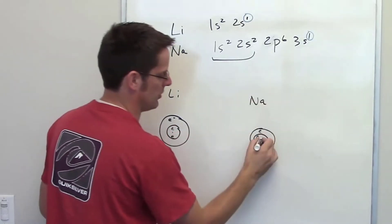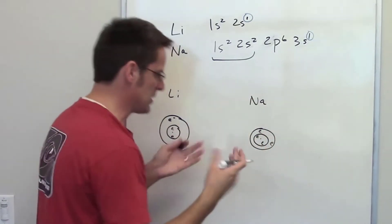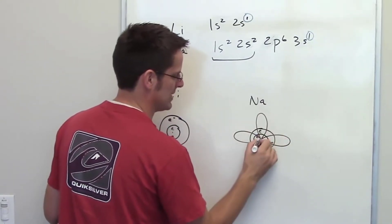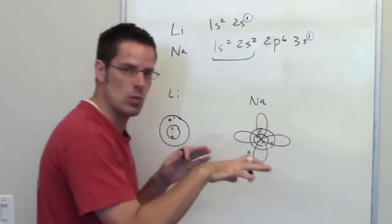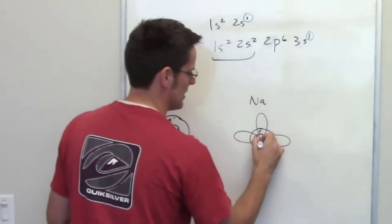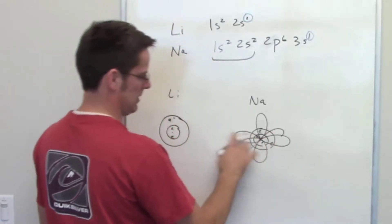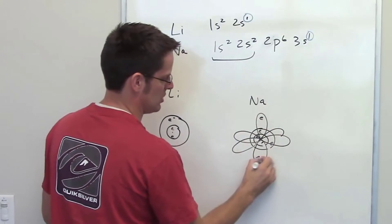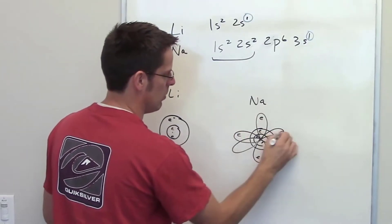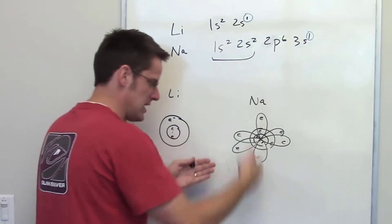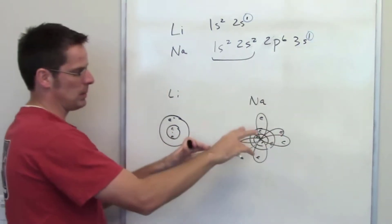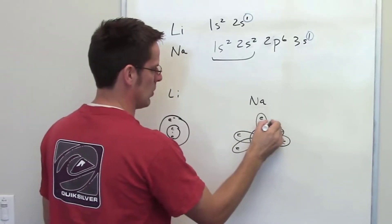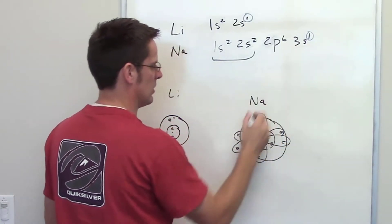It also has 2p-orbitals. Every single set of p-orbitals has actually three of them: one occupies the x-axis, one the y-axis, and one the z-axis. Within those there are six electrons, two in each individual lobe, all perpendicular to each other. And then outside all of that, nested within it, is a 3s orbital — even larger — with a single electron in it.